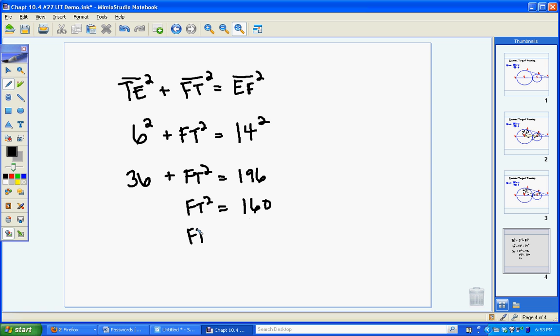FT now is equal to plus or minus the square root of 160. And now because I know that the length cannot be a negative value, it just becomes a positive. So FT ends up being 4 root 10.